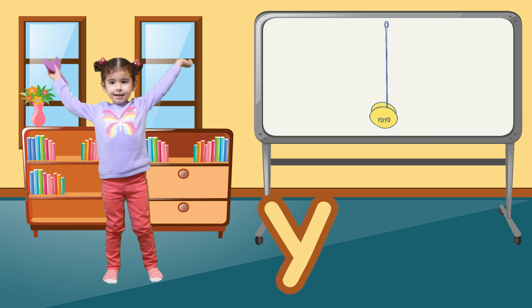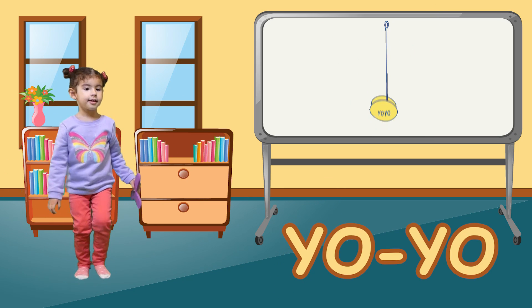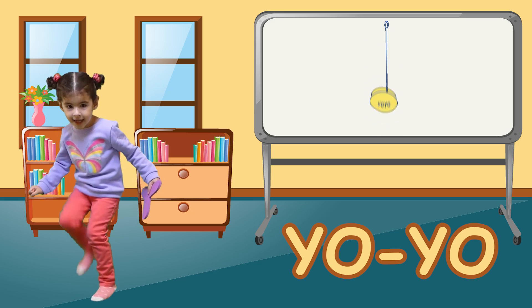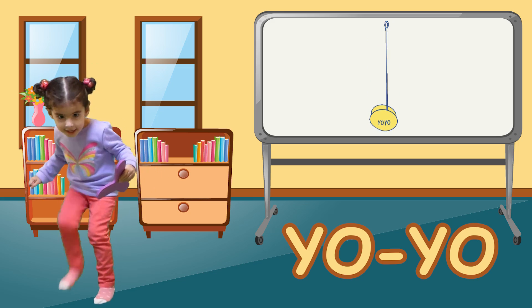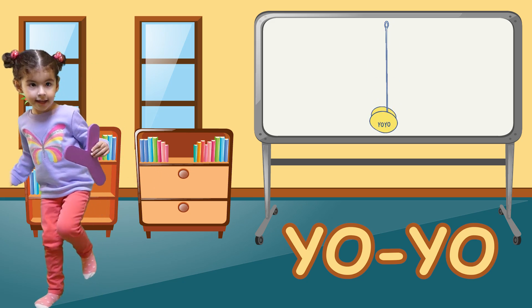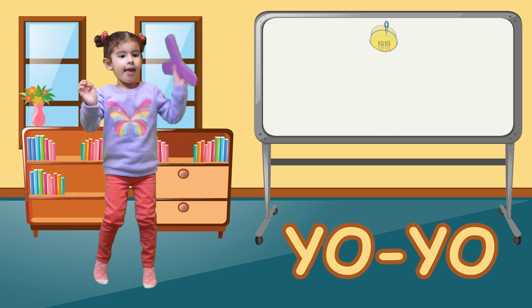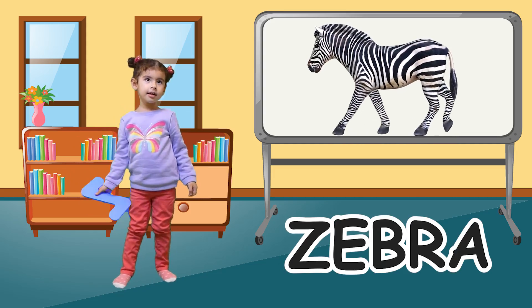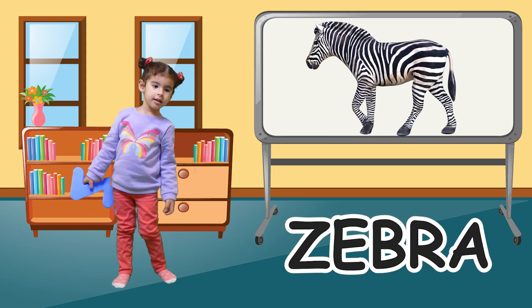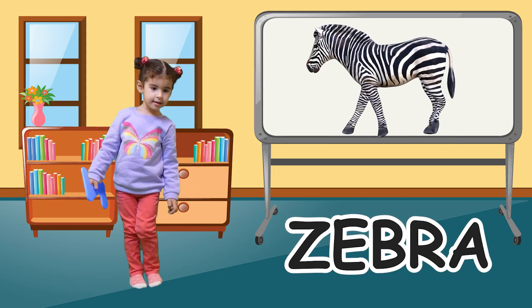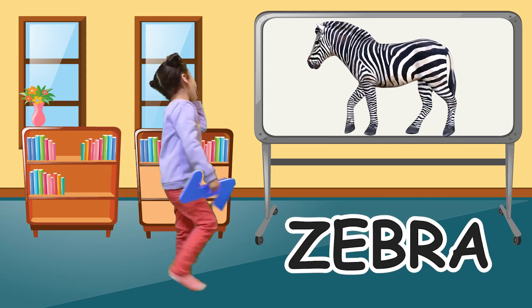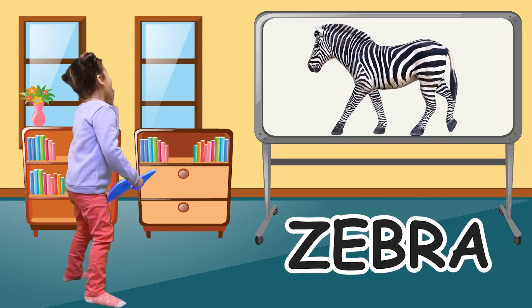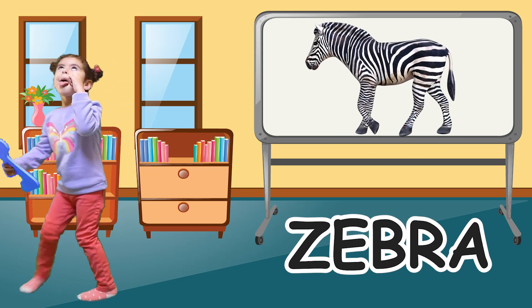Y is for yoyo. Y, yoyo, Y, yoyo, Y, yoyo. Z is for zebra. Z, zebra, Z, zebra, Z, zebra.